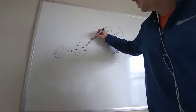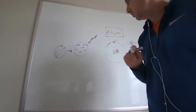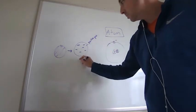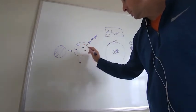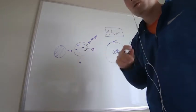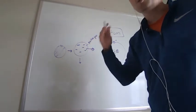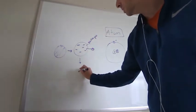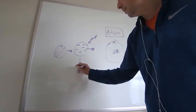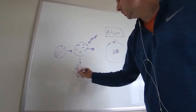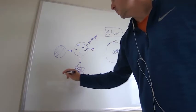Rutherford, Thompson's student, says there's not positive goo because when I shoot positive things at it, it flies straight through except for when it bounces off every once in a while, which makes no sense unless all the positivity is sitting in one spot. Therefore the electrons must be doing what the planets are doing.